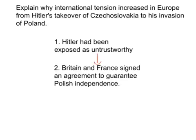My second point can quite easily be linked to my first. Another reason why international tension increased was because Britain and France signed an agreement to guarantee Polish independence. This was a direct result of the fact that Hitler had been exposed as untrustworthy. Chamberlain now saw he needed to act to stop Hitler from expanding further. Unfortunately, Hitler's next objective was quite clear — as a result of the Polish corridor, Germany was likely to attack Poland. The fact that Britain and France guaranteed Polish independence at the same time as Poland being Hitler's next objective would inevitably mean tension across Europe would increase dramatically.